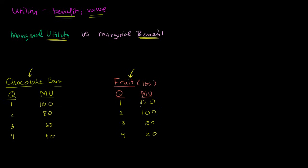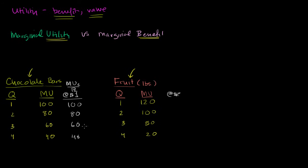So let's put some prices on these goods and think about how we would actually allocate our dollars, given these marginal utility numbers. Let's say chocolate bars are one dollar per bar and fruit is two dollars per pound. Now we're going to think about marginal utility per dollar for each incremental item. For the first chocolate bar: I spend a dollar and get a hundred marginal utility points, so I'm getting a hundred marginal utility points per dollar. The second bar gives 80 per dollar, the third gives 60, and the fourth gives 40.